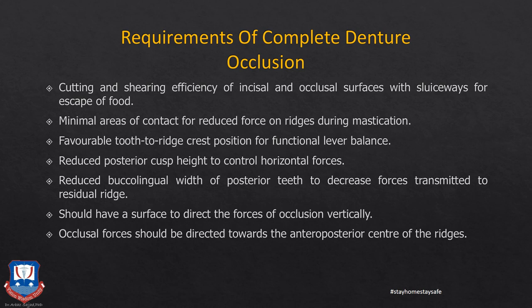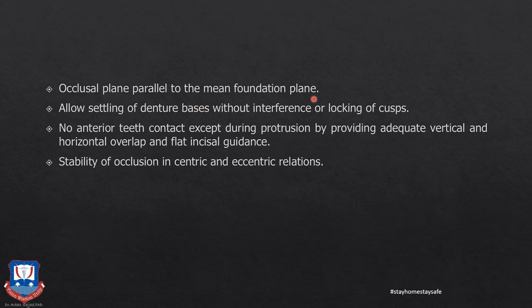The requirements of a complete denture occlusion include: cutting and shearing efficiency of the incisional and occlusal surfaces with sluiceways for escape of food; minimal area of contact to reduce forces on the residual ridges during mastication; a favorable tooth-to-ridge crest position for functional lever balance, with teeth arranged along the center of the ridge; reduced posterior cuspal height to control horizontal forces; and reduced buccolingual width of the posteriors to decrease forces transmitted to the underlying residual ridges.